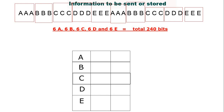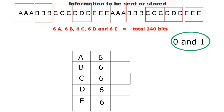We will record how many times each character is used — in other words, the frequency of each character, which is six each in that message. Now we will use zero and one — binary bits — to represent our codewords, which we will use to compress or encode our data. Since this is a fixed-length code, we'll use a three-bit binary number.